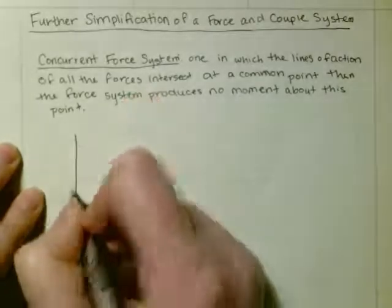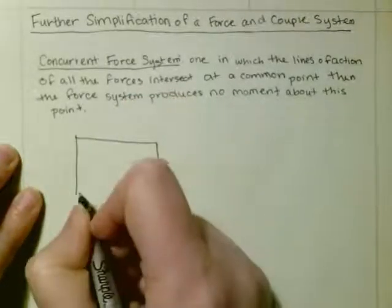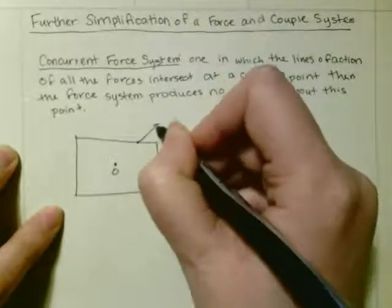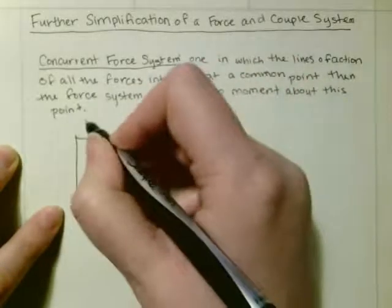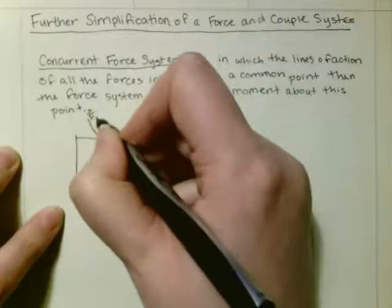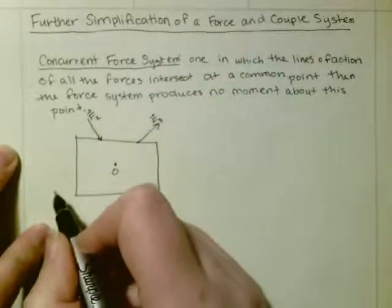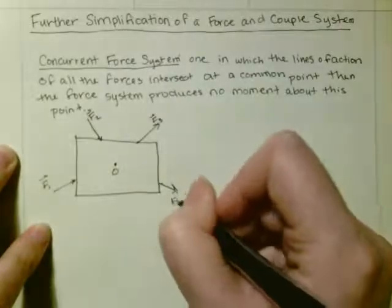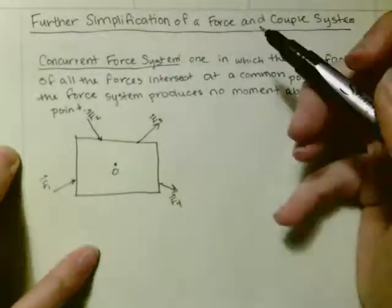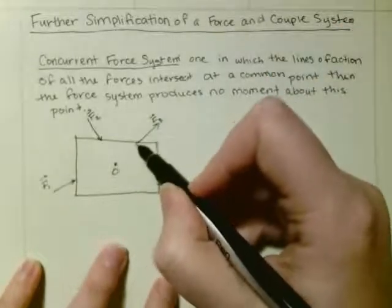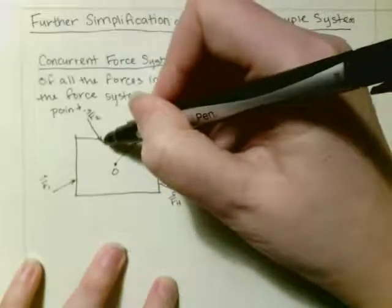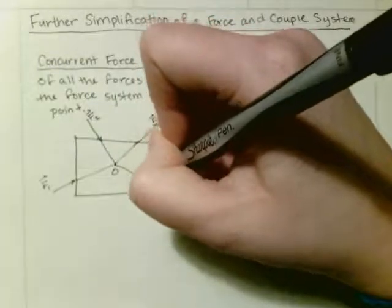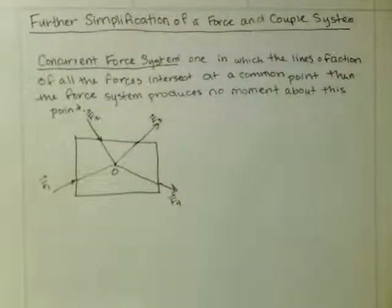Okay, so say we had a surface and you had point O, and let's say we had F3, F2, F1, and F4. So this line of action goes right through O. This line of action right through O. All of these go right through O such that these forces don't produce a moment about point O.